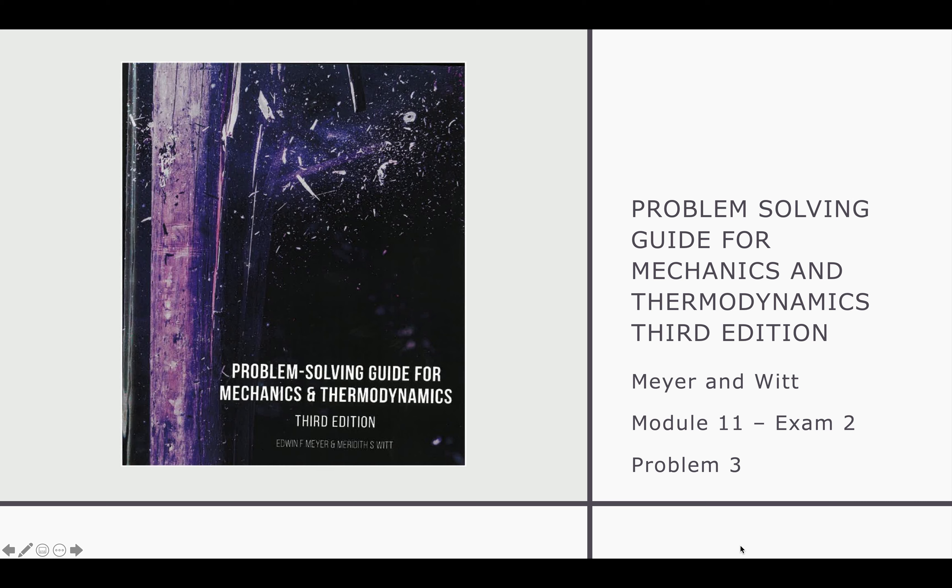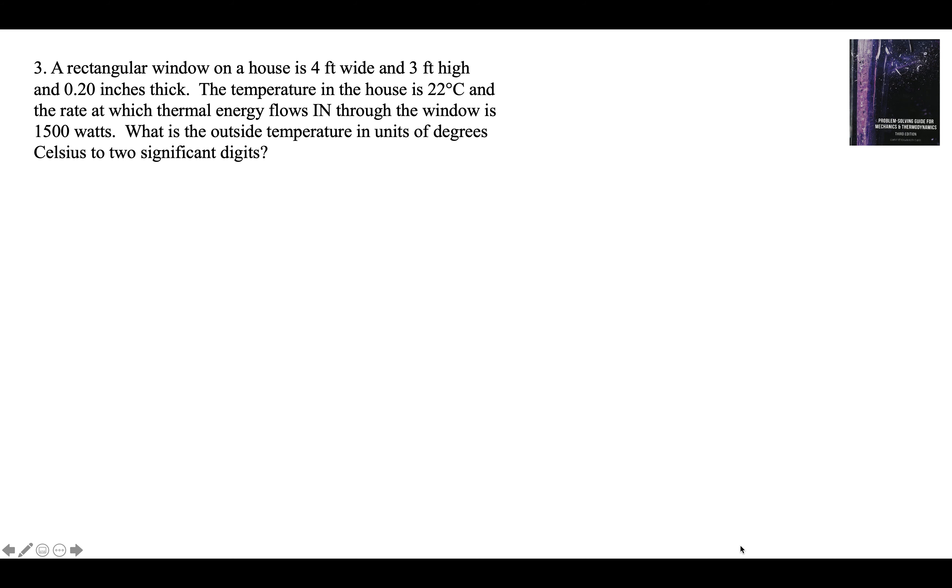This is problem 3 on practice exam 2 of module 11 in the book Problem-Solving Guide for Mechanics and Thermodynamics. A rectangular window on a house is 4 feet by 3 feet and 0.2 inches thick. Temperature inside the house is 22 degrees Celsius. The rate at which thermal energy flows in through the window is 1,500 watts. What is the outside temperature in units of degrees Celsius to two significant digits?